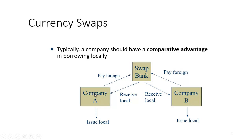Looking at this diagram, company A would issue securities in their local market and company B would issue securities in their local market. Company A pays the foreign rate to the swap bank and receives the local rate — these cancel out. Company B pays the foreign rate to the swap bank and receives its local rate — these cancel out as well. So essentially company B gets the rate issued by company A in their local market, and company A gets the rate that company B gets in their local market.